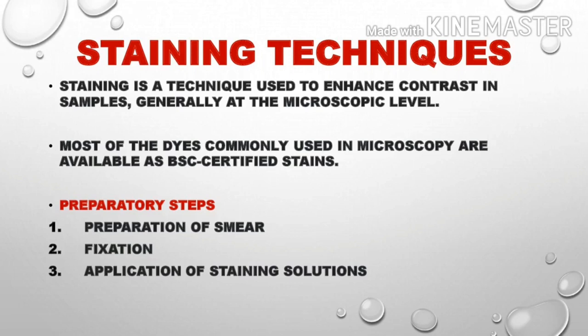Now the basic procedures of staining techniques. The first preparatory step is the preparation of a smear. The second step is fixation — specifically heat fixation — where we fix the specimen in the correct position. Next is the application of staining solutions: we apply one or two drops of stain and fix it. Then we view the mount under the microscope.